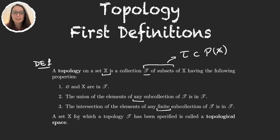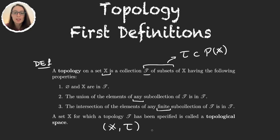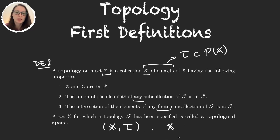We say that X with the topology tau is going to be a topological space. In some books, we say that the pair (X, tau) is a topological space. Sometimes when it's not necessary to specify the topology, we will just say X is a topological space — it's implied that we have a set tau.